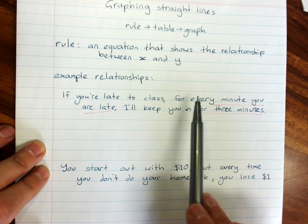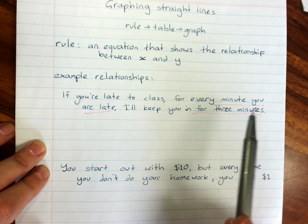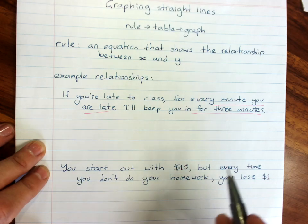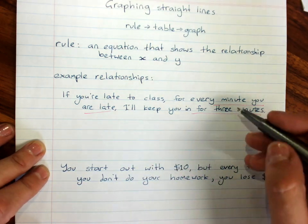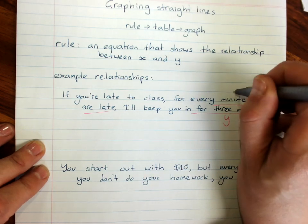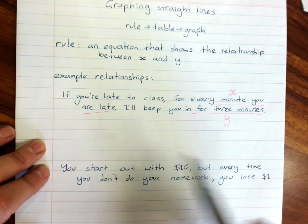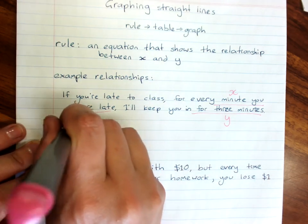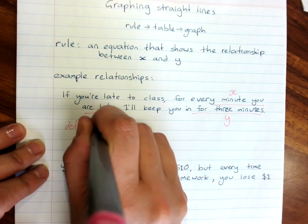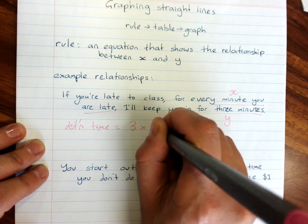Now, how long you're kept in depends on how long, how late you are. So we always make the one that depends the y, and the other one is the x. And how long I'm kept in, so my detention time, is three times the minutes late.